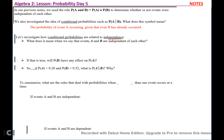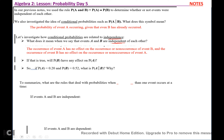What does it mean when we say that events A and B are independent of each other? It means that the occurrence or non-occurrence of one event does in no way, shape, or form affect the occurrence or non-occurrence of the other event. So if P(A) = 0.20 and P(B) = 0.52, what is P(A|B)? Well, P(A|B) is just going to be P(A) because if B does not affect A, the probability of B isn't going to change the probability of A happening.